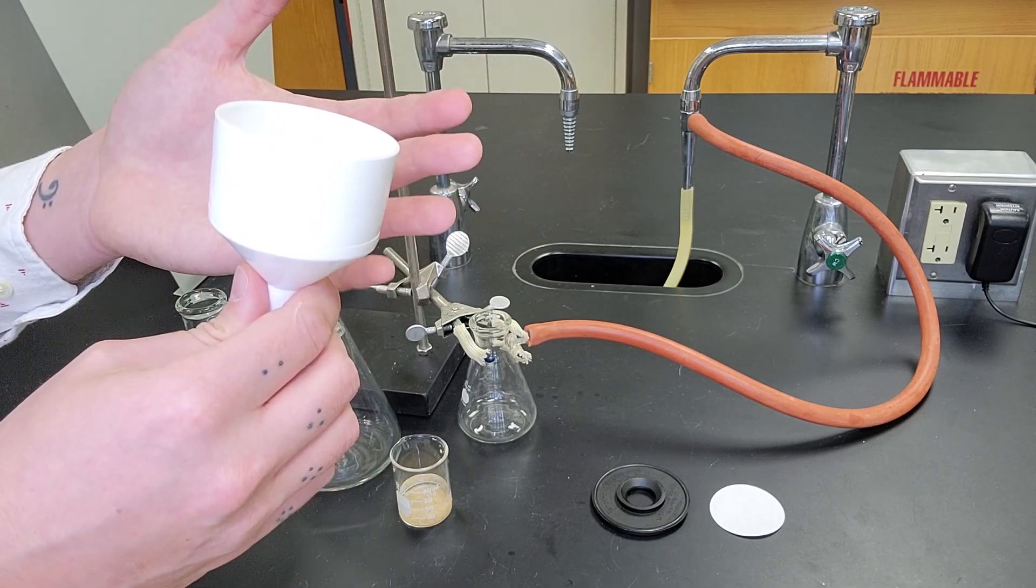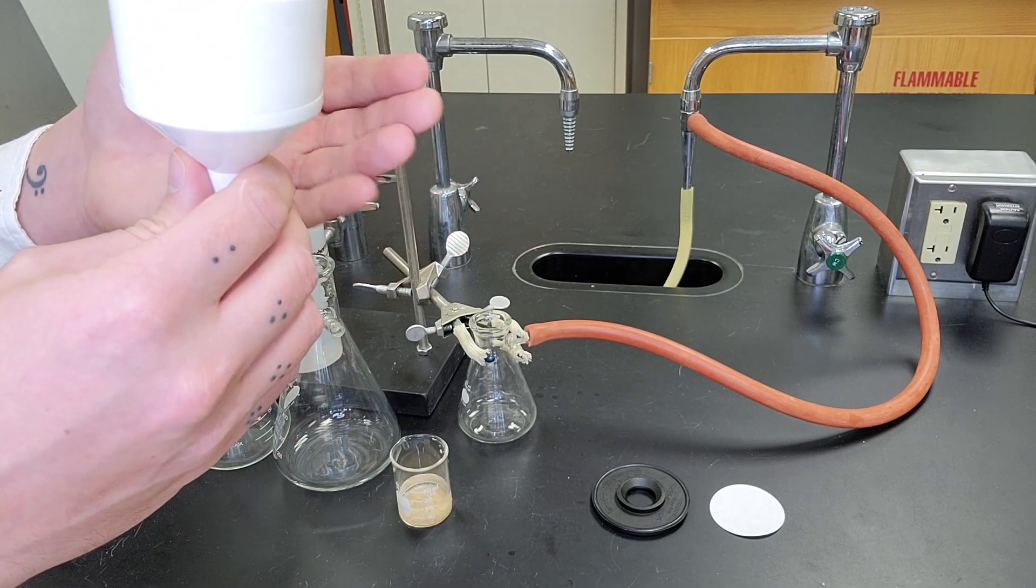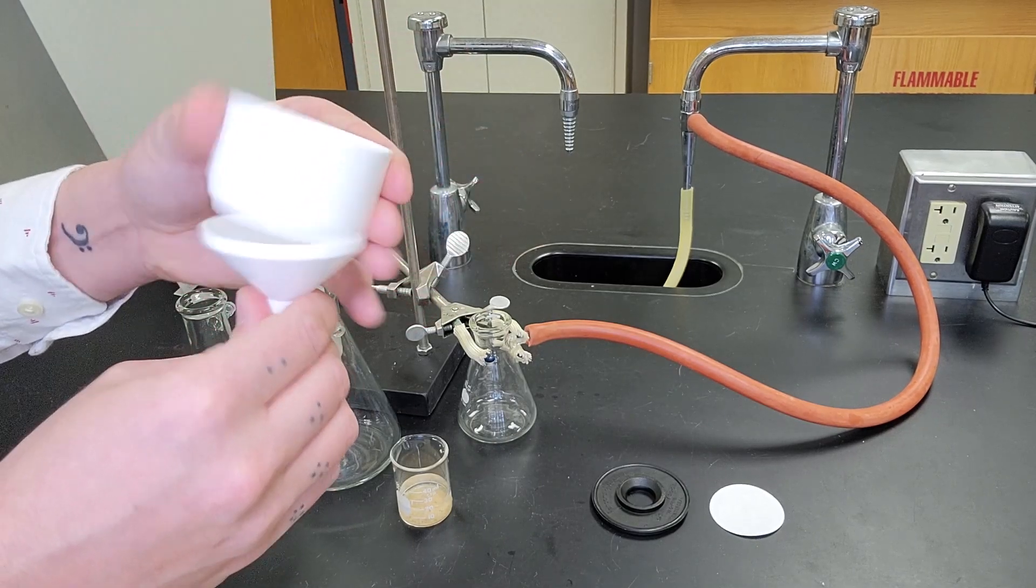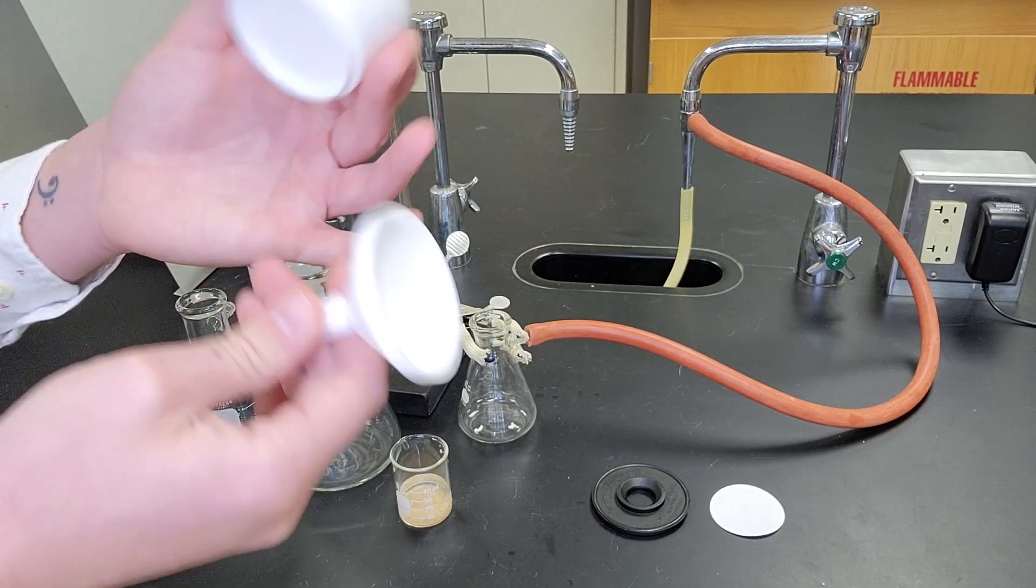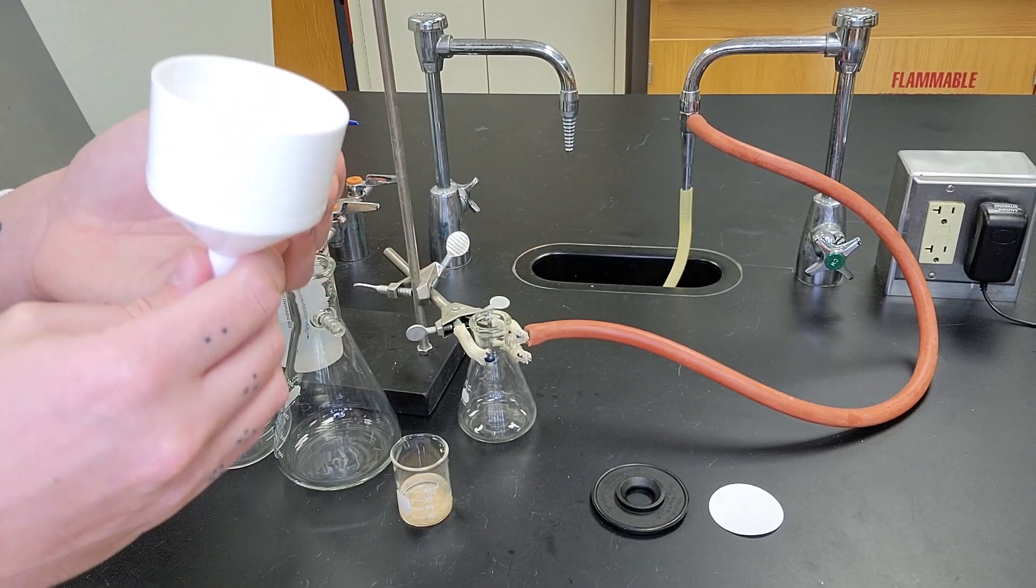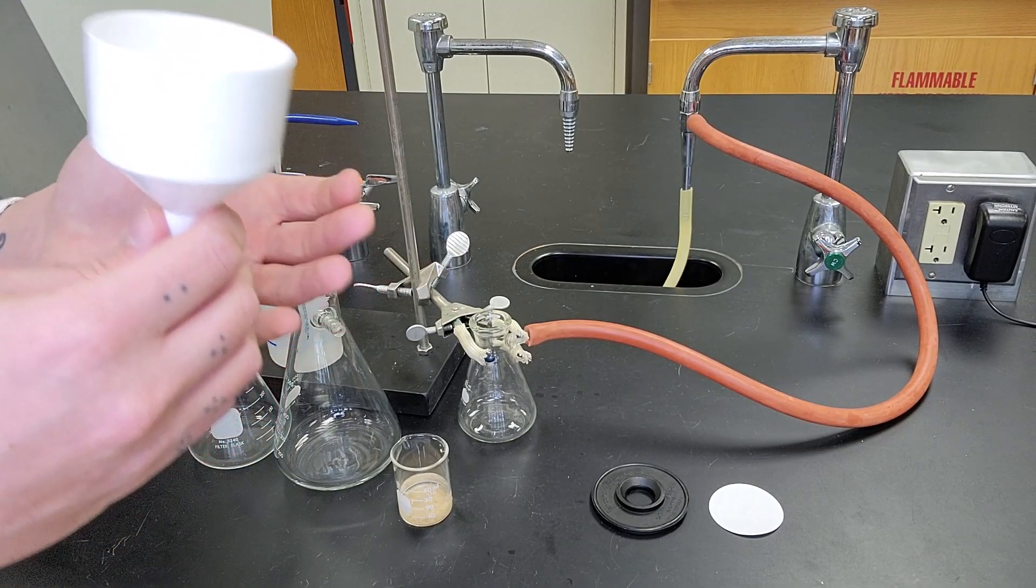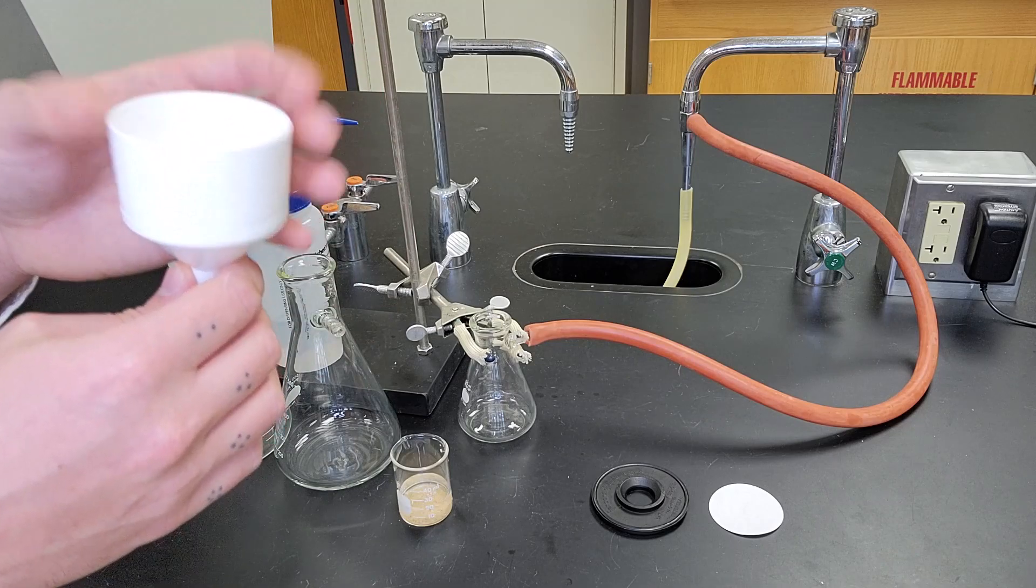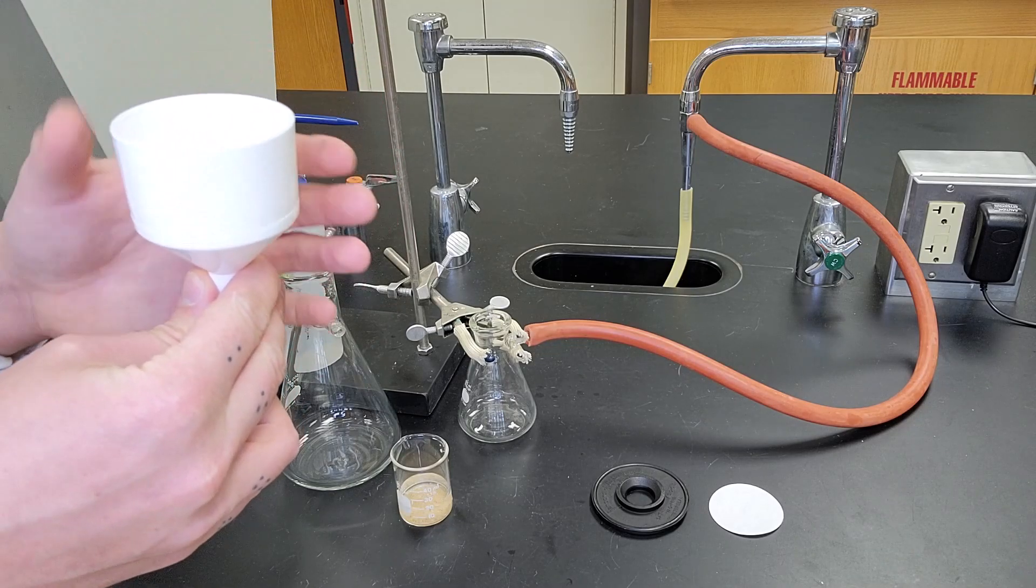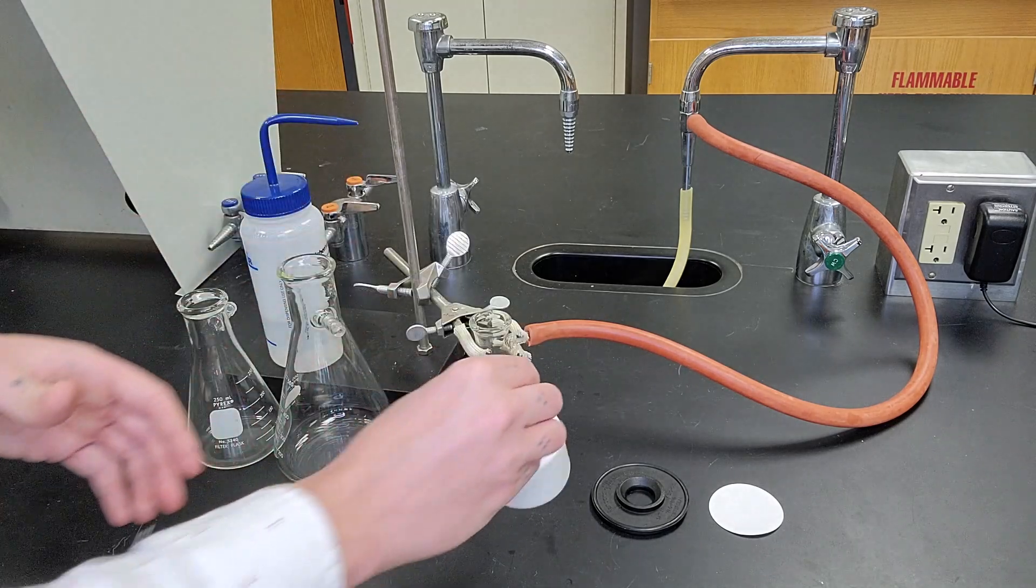This is a plastic Buchner funnel. They make glass ones and ceramic ones. The nice part about these plastic ones is the top and bottom come off for easy cleaning, but ceramic ones are a little more common in research laboratories. The plastic ones do get stained and are not as efficient as the ceramic ones.